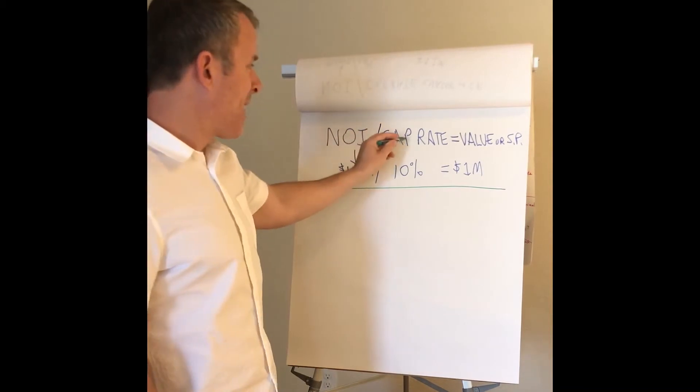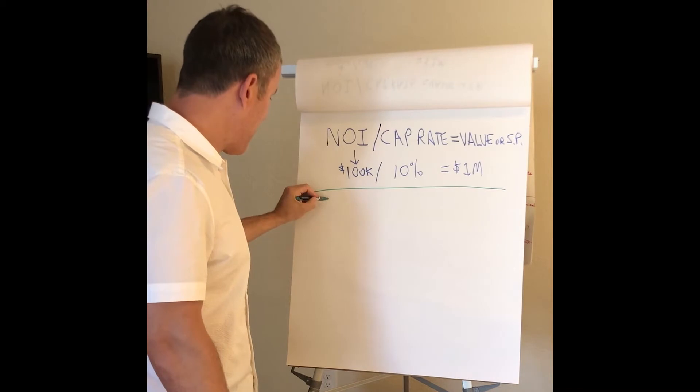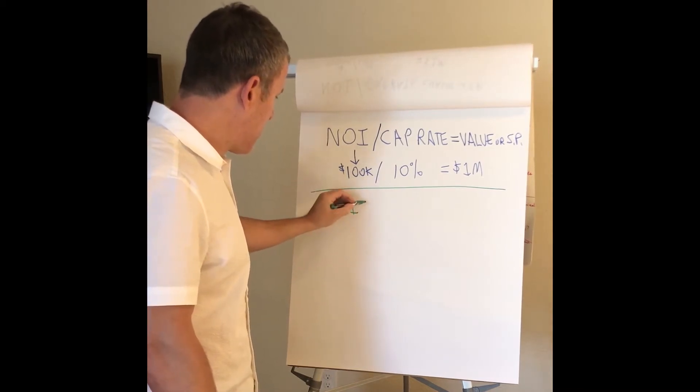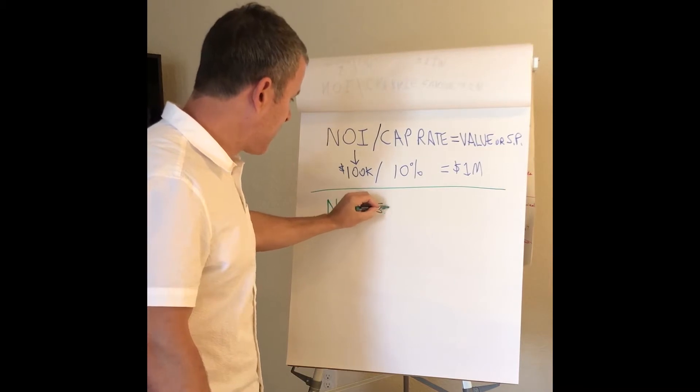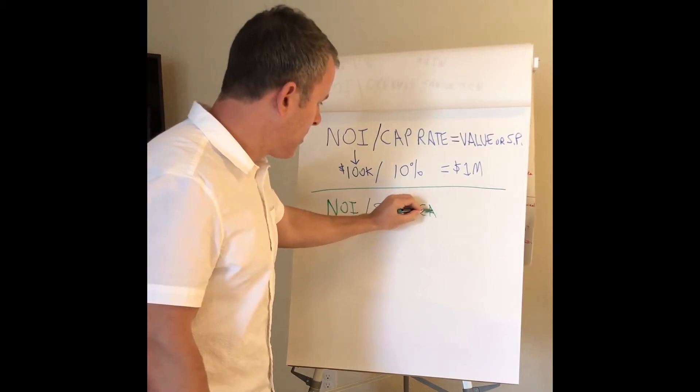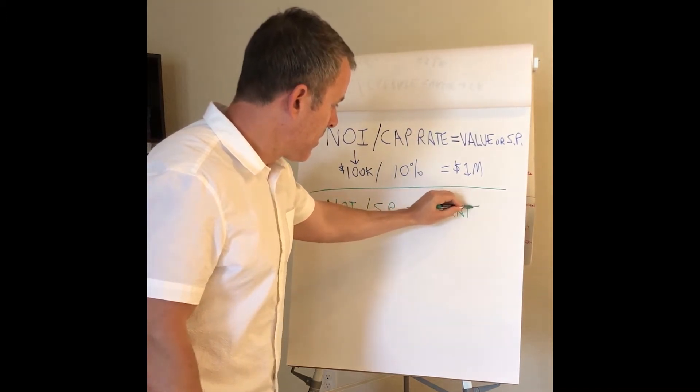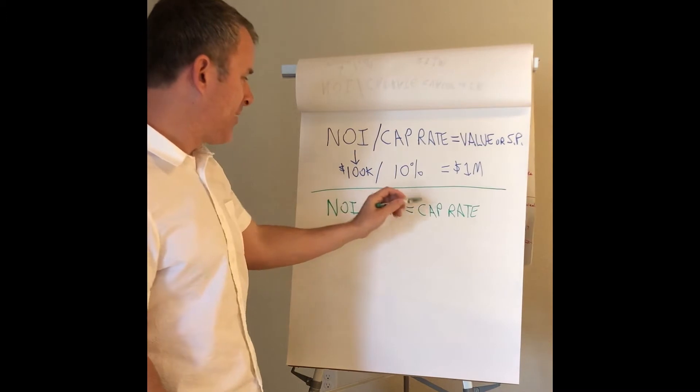So NOI divided by cap rate equals your selling price is true, then the reverse is true as well. What I mean by that is your NOI divided by your selling price equals your cap rate. NOI divided by selling price equals your cap rate.